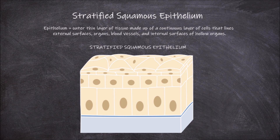These can be distinguished based on a mixture of the number of layers of cells the epithelium is made up of, and the shape of the epithelial cells. When the epithelium consists of two or more layers of epithelial cells, this is called stratified.